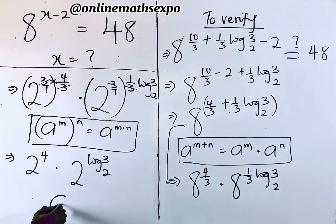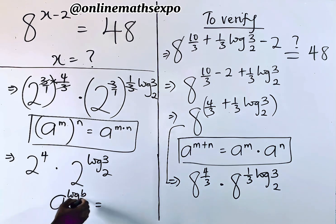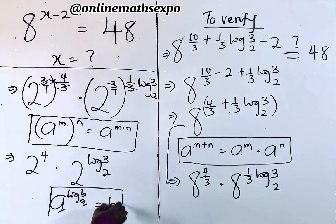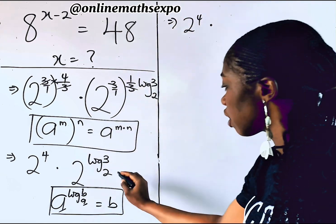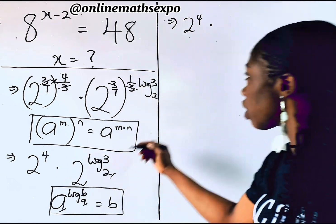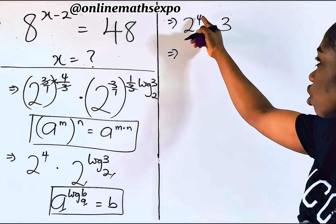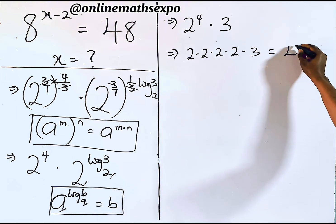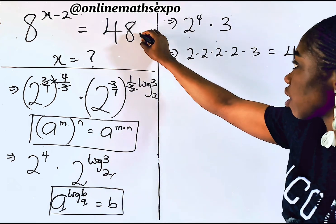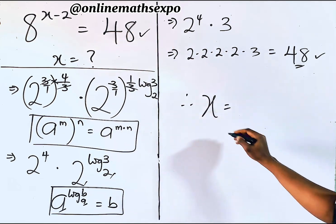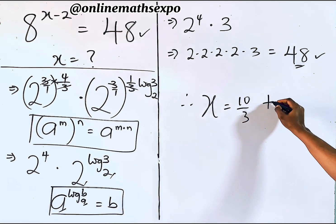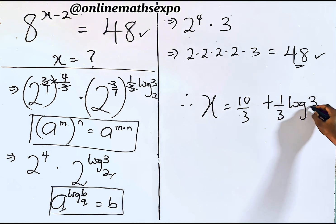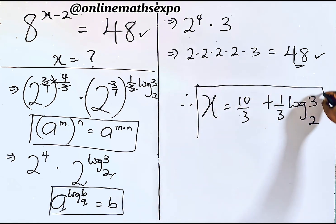Remember, for every a^(log base a of b), the bases are the same, so it equals b. Applying this: 2^(log base 2 of 3) equals 3. So we have 2^4 multiplied by 3, which is 16 × 3 = 48. That is exactly what we have on the right side, confirming that x = 10/3 + (1/3)·log base 2 of 3 is absolutely correct.